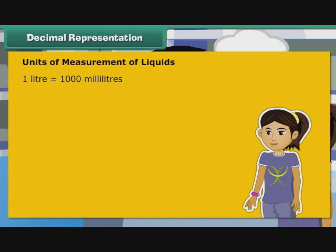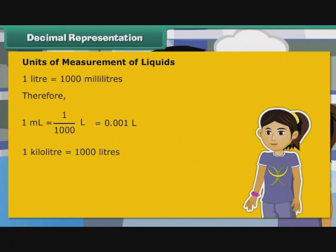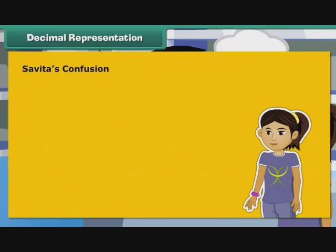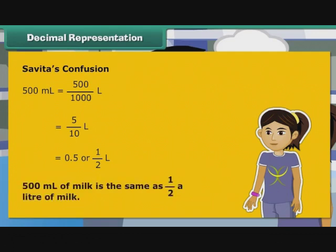1 litre is equal to 1000 millilitres. Therefore, 1 ml is equal to 1 by 1000 litre, that is equal to 0.001 litre. 1 kilolitre is equal to 1000 litres. Therefore, 1 litre is equal to 1 by 1000 kilolitre, that is equal to 0.001 kilolitre. Now, 500 ml is equal to 500 by 1000 litre, that is equal to 5 by 10 litre, that is equal to 0.5 or 1 by 2 litre. So 500 ml of milk is the same as half a litre of milk. Savita is now relieved.